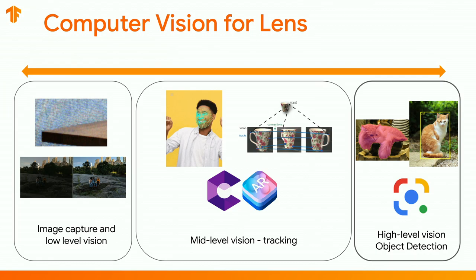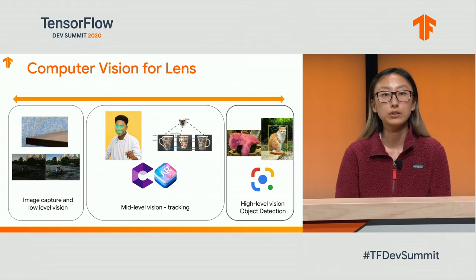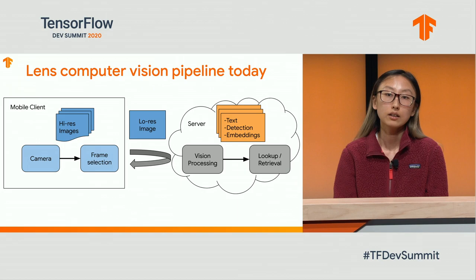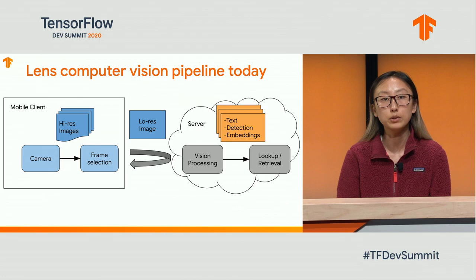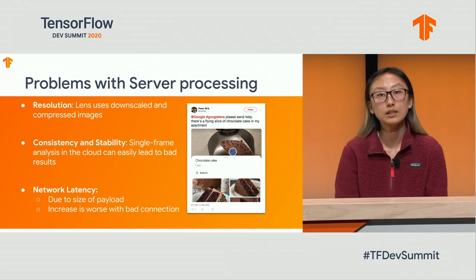Just like you saw in the examples, Lens utilizes the full spectrum of computer vision capabilities, starting with image quality enhancements such as denoising and motion tracking in order to enable AR experiences, and then particularly deep learning models for object detection and semantic understanding. On the mobile client, we select an image from the camera stream to send to the server for processing. On the server side, the query image gets processed using a stack of computer vision models in order to extract text and object information from the pixels. These semantic signals are then used to retrieve search results from our server-side index, which then gets sent back to the client and displayed to the user.